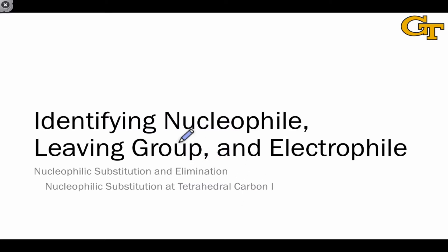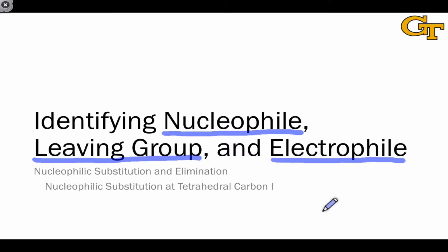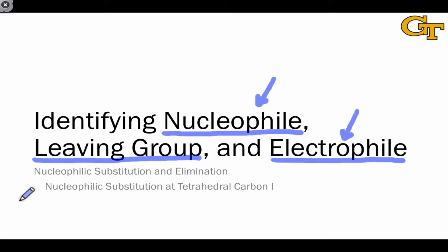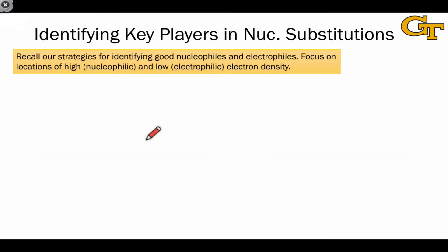In a nucleophilic substitution context, this comes to identifying the three key players: the nucleophile, the leaving group, and the electrophile. In this video, we're going to discuss strategies for doing this, drawing on foundational ideas about how to identify nucleophiles and electrophiles, and also invoke the analogy of nucleophilic substitutions with proton transfer processes to think about what makes a good leaving group, which we'll explore in more detail in the next video as well.